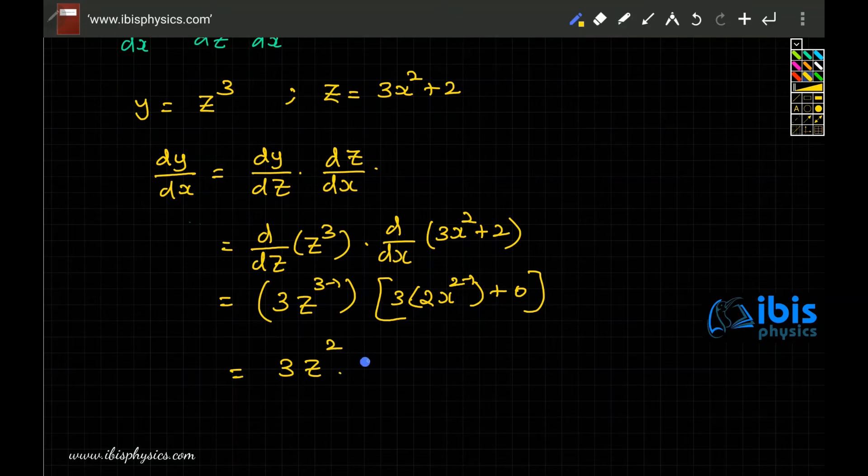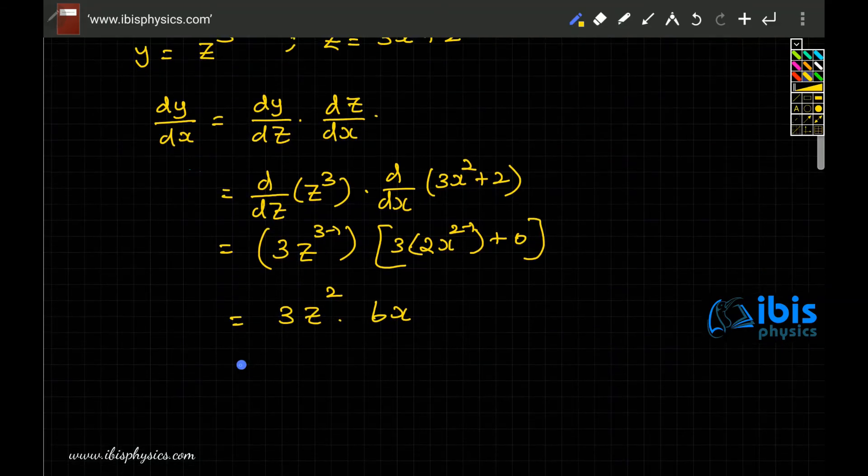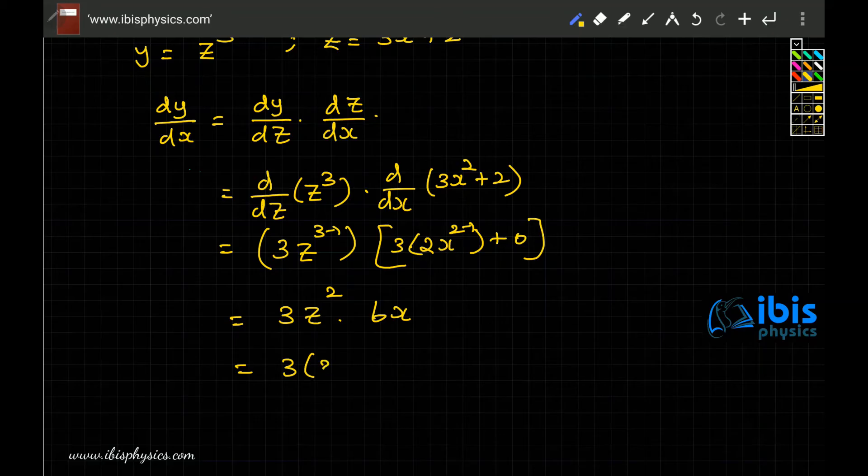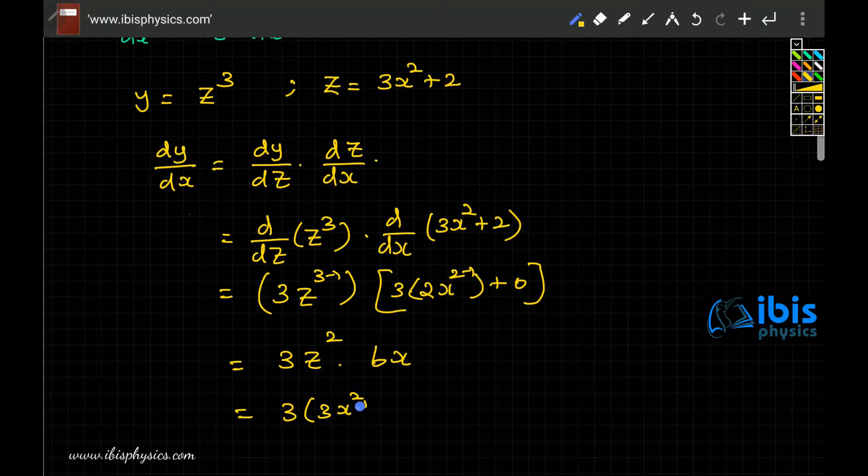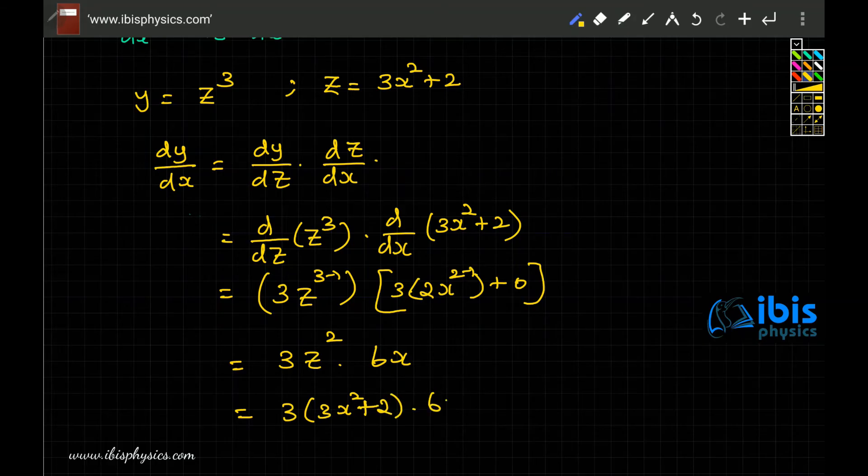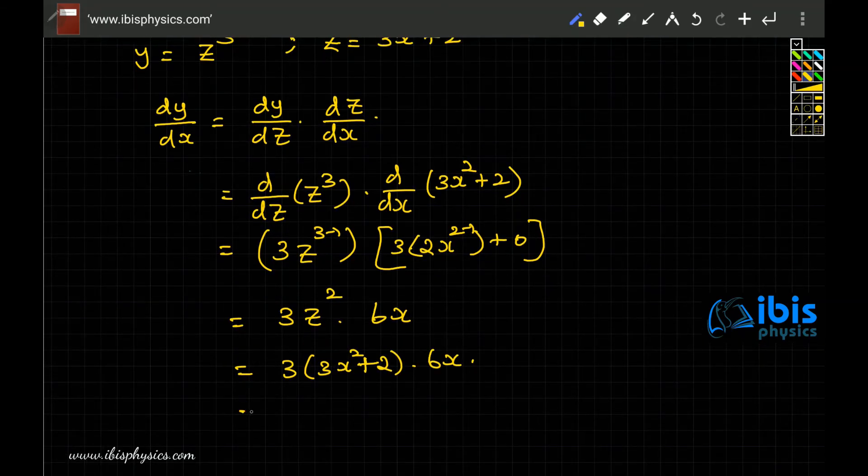So it is 3z² × 6x. But z is actually equal to 3x² + 2, so this has to be 3 times (3x² + 2) into 6x.